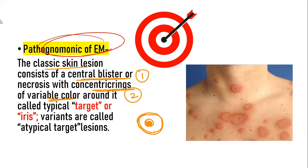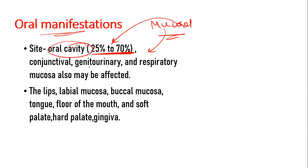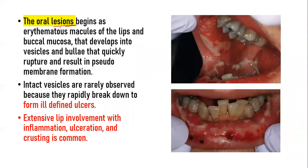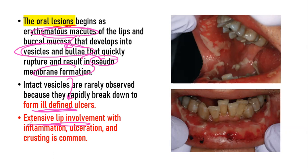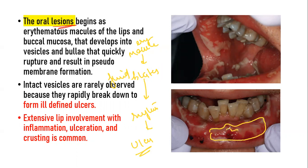Coming to the oral manifestations, the most common site of mucosal involvement is the oral mucosa in up to 70% of cases. Other mucosae involved include the genitourinary, respiratory, and conjunctival mucosa. In the oral lesions, they begin as erythematous macules that develop into vesicles, bullae, or blisters that ulcerate and result in pseudomembrane formation. They are ill-defined ulcers, and there may be extensive lip involvement with inflammation, ulceration, and crusting.